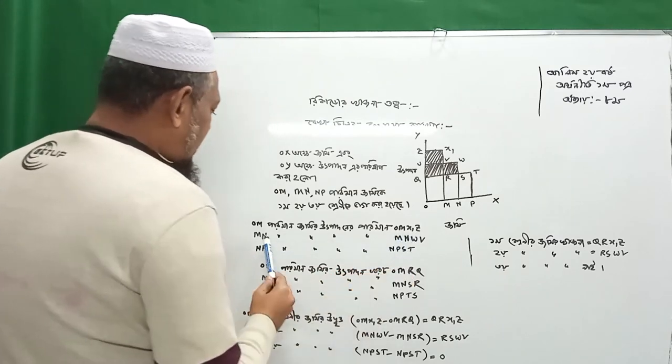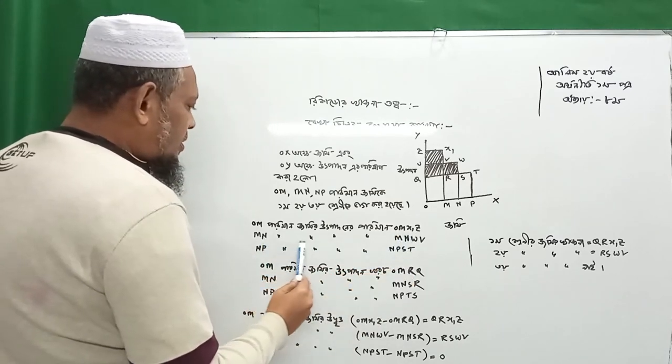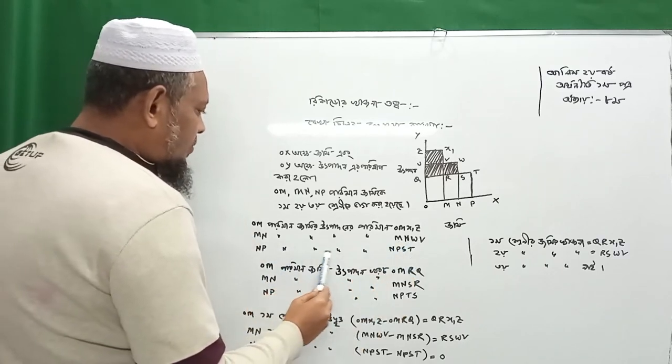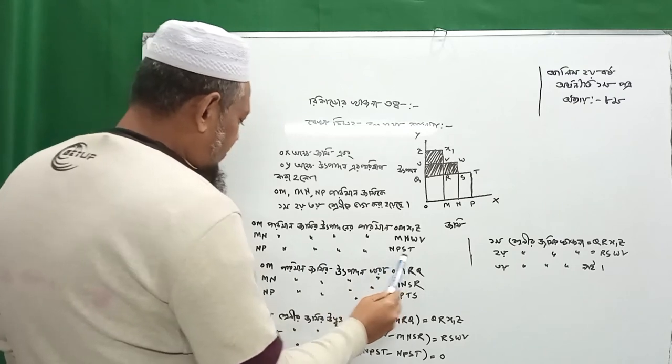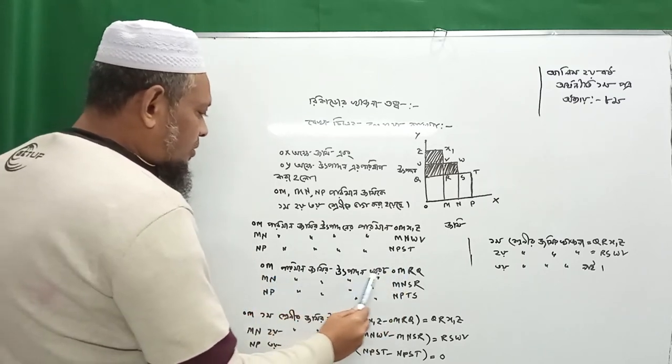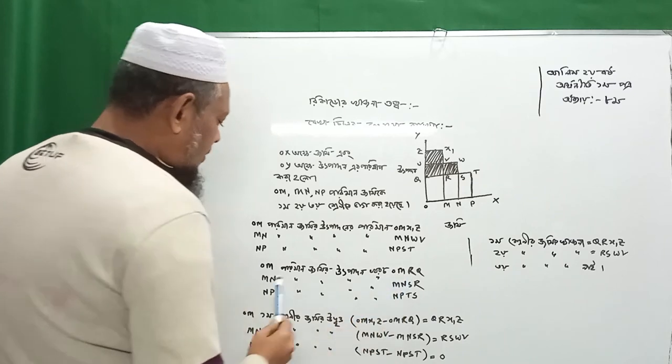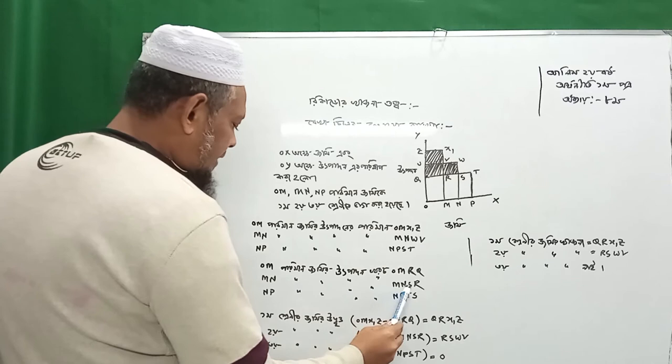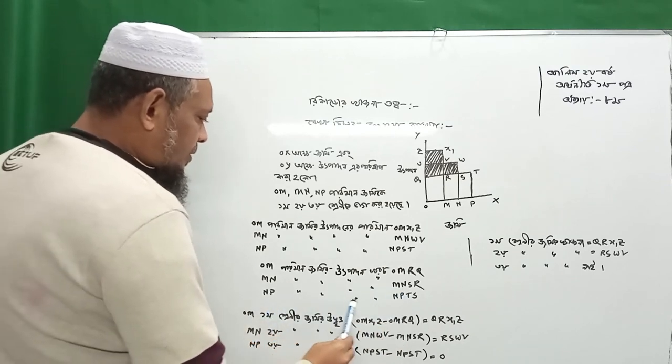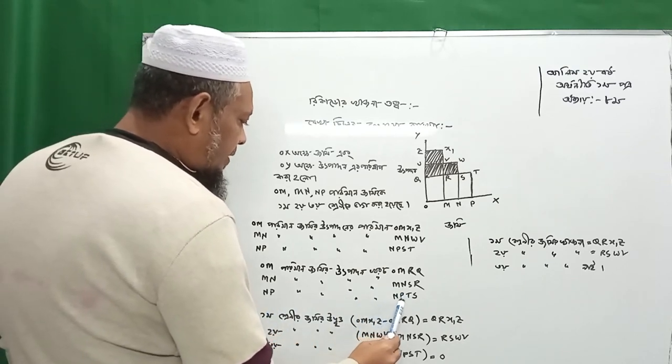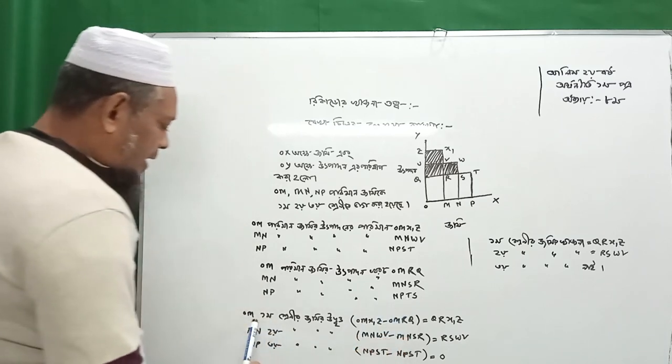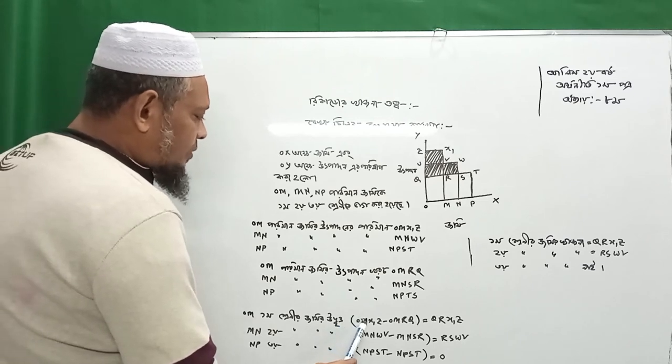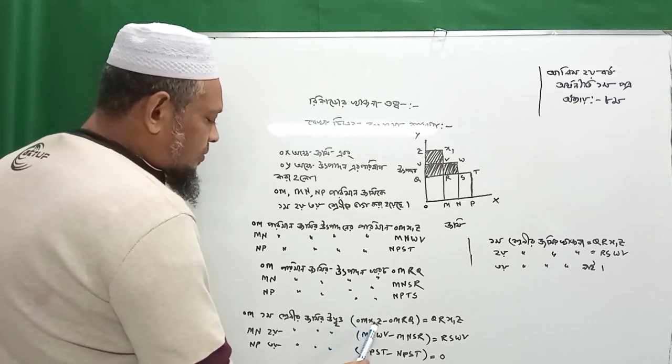The first term is MRX1Z and the second term is MNWB, URQ, UMURQ, and NPST.